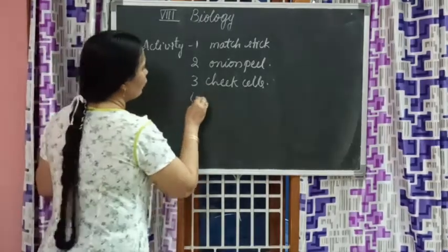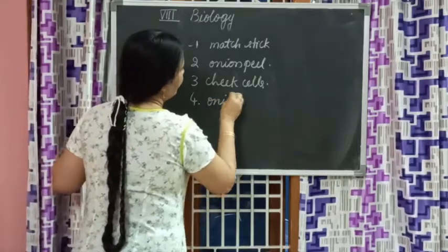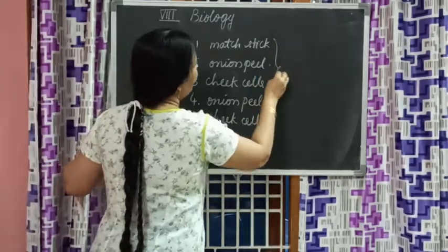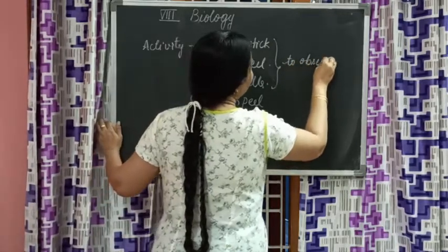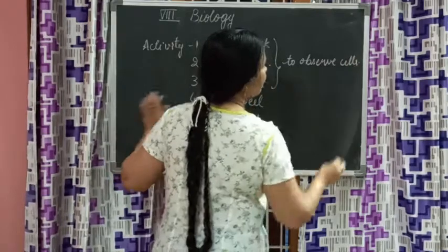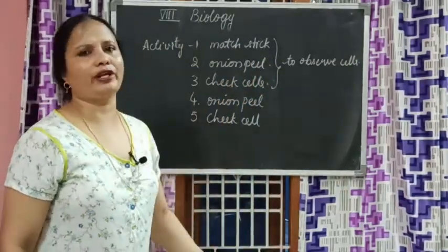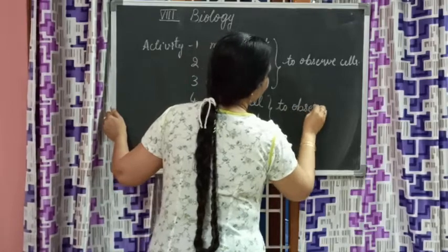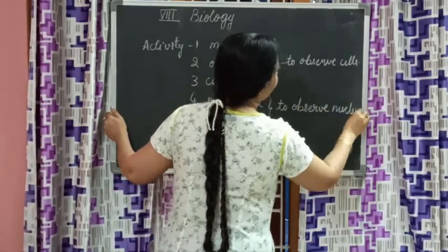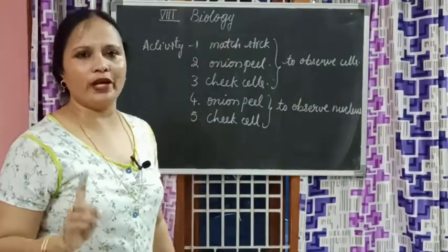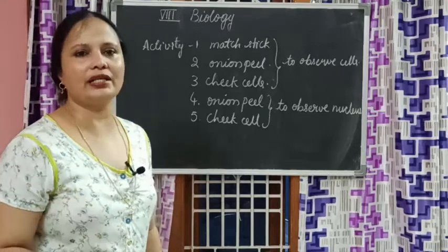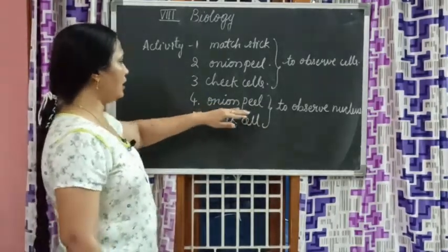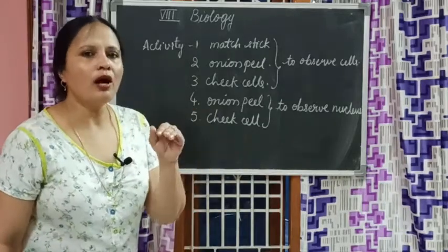Activity four is again onion peel, and activity five is again cheek cell. These two experiments are to observe the nucleus. As per Robert Brown, every single individual is made up of cells, and every cell has a dense part inside it which we call the nucleus. Now we are going to note the differences observed in onion peel and cheek cells.